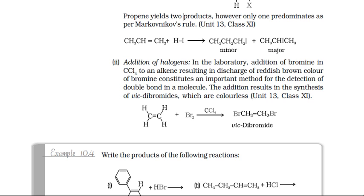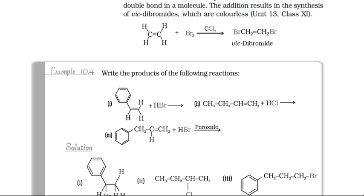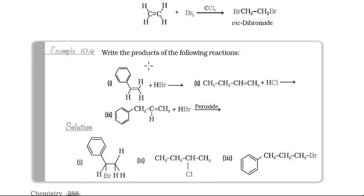Now for worked examples: write the product of the following reactions. The first alkene reacts with HBr — Markovnikov's addition takes place, so Br attacks the carbon with fewer hydrogens (carbon 2) and hydrogen goes to the other carbon, giving that product. Similarly, 1-butene is allowed to react with HCl — again Markovnikov's addition takes place and chlorine goes to the CH and hydrogen to the CH₂, giving 2-chlorobutane.